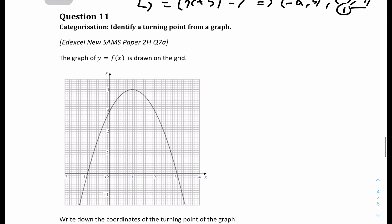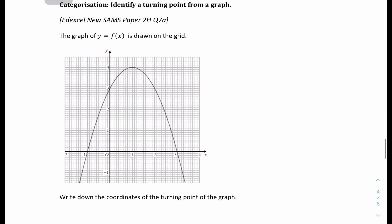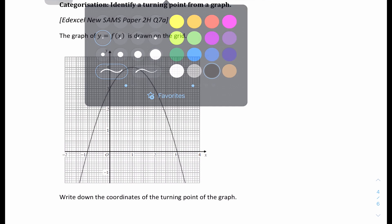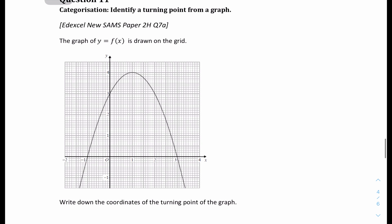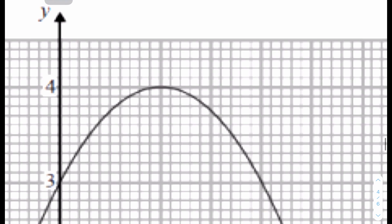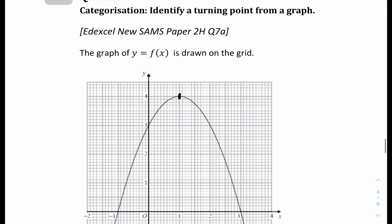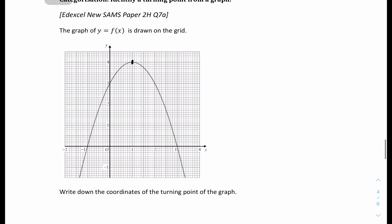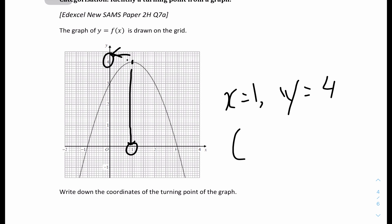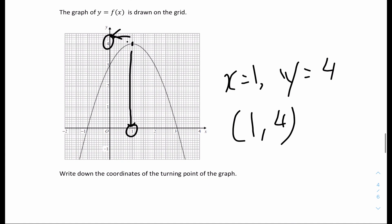Question 11: the graph is drawn on the grid — write down the coordinates of the turning point. This is quite straightforward. Looking at the graph, you can identify the turning point. Looking down from the top, the x value goes to 1 and the y value goes to 4 on the y-axis. So the x value is 1 and the y value is 4. The coordinates of the turning point are (1, 4).